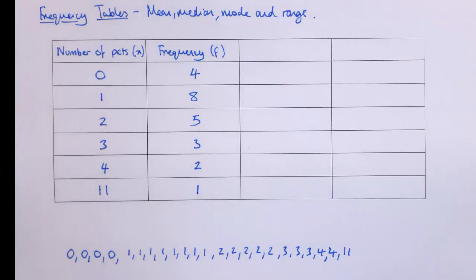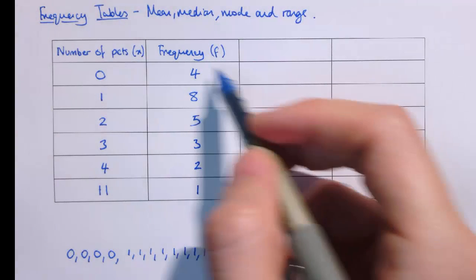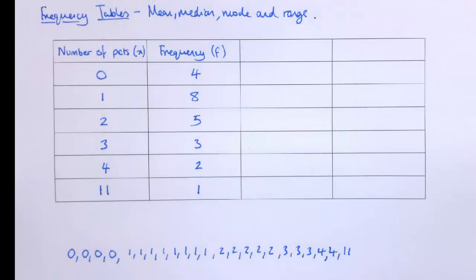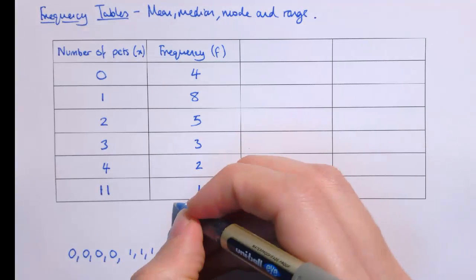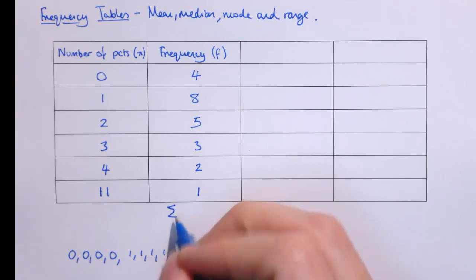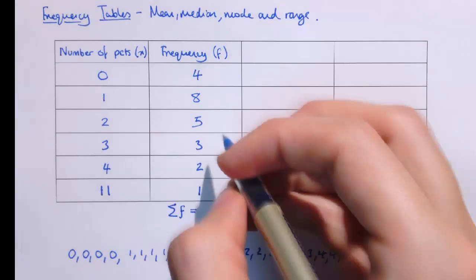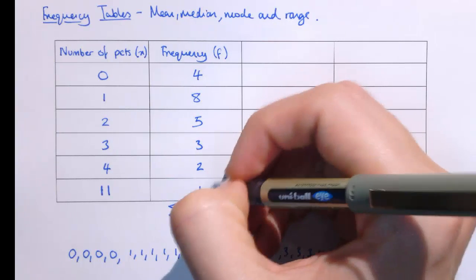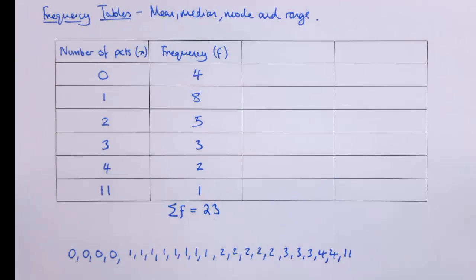Let's start with the mean. For the mean, we want to add up all the different values and divide by how many values there are. How many values are there? Well, we could count through the list, or we could add up all the frequencies. If we add up all the f's — all the frequencies — using the Greek capital sigma which means sum: 4 plus 8 is 12, plus 5 is 17, plus 3 is 20, plus another 2 and 1, so that's 23. There were 23 people in this class.